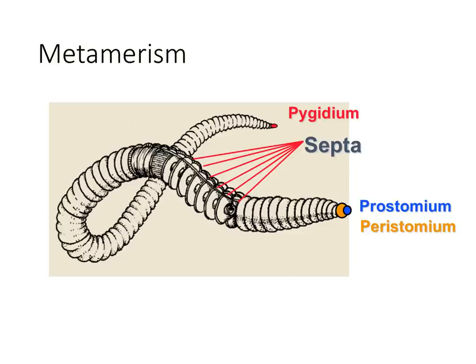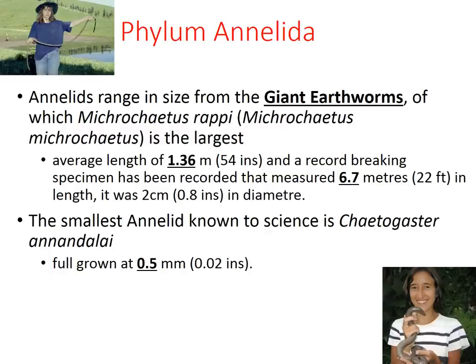Here is a diagram showing what the quality of metamerism looks like — you can see the dividing tissue separating all the different segments. Annelids can be gigantic. These two individuals are holding some rather large segmented worms. The average length of the biggest kind, the giant earthworm, is 1.36 meters or 54 inches, and one was found that was about 22 feet — 6.7 meters — long, though it was very skinny at only 2 centimeters in diameter. The smallest known annelid is only about half a millimeter long when fully grown, so they can range in size quite a bit.